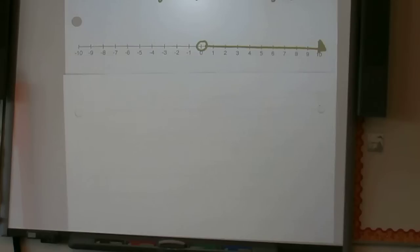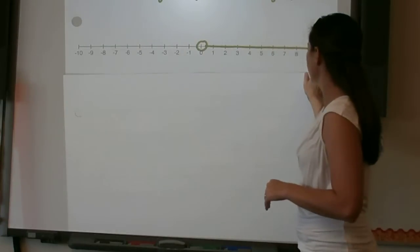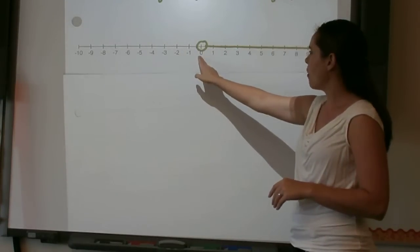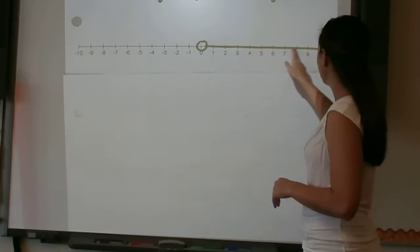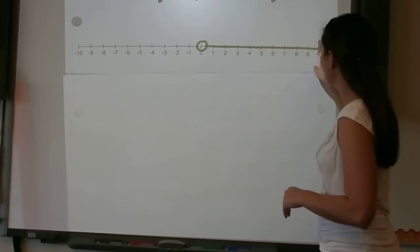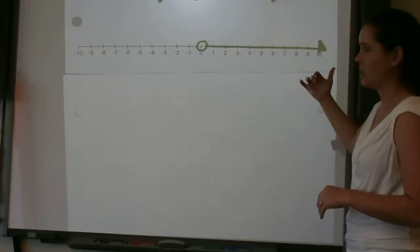So right now we see a number line from negative 10 to positive 10. And at the zero mark, I have an open circle and then a line coming this way and an arrow that says keep on going, all the way to a million if you need to go to a million.